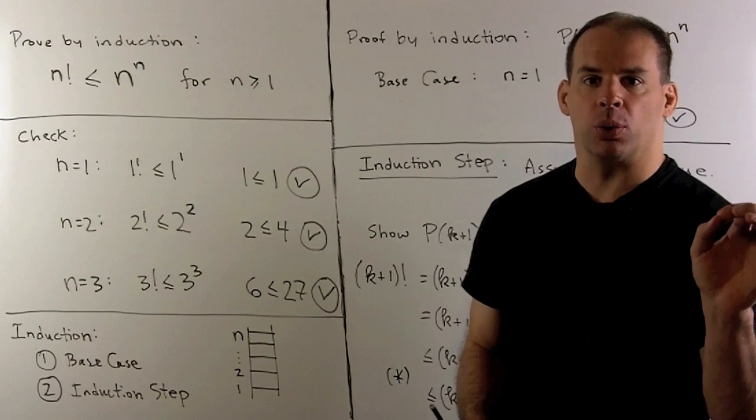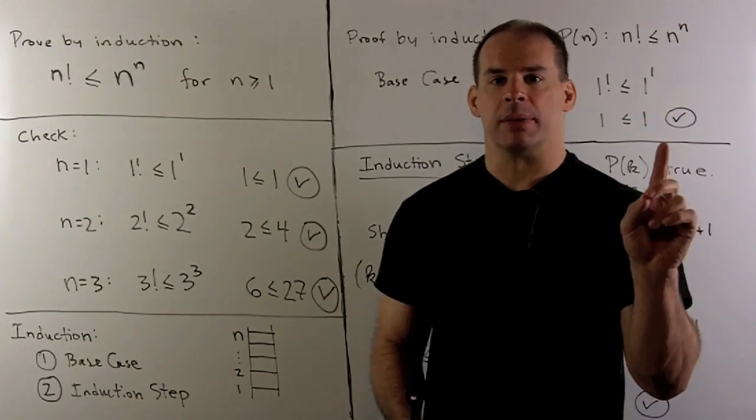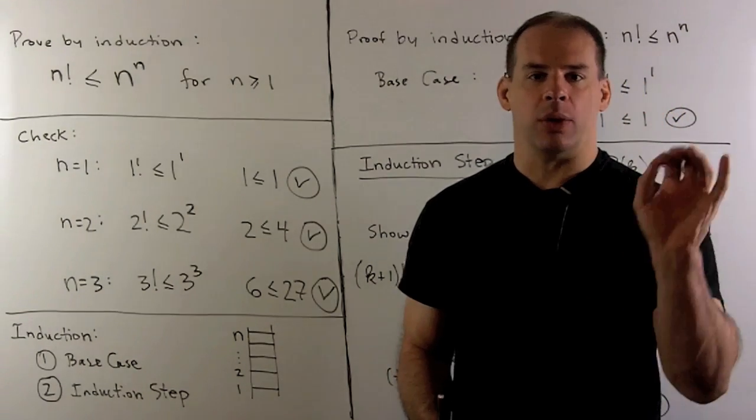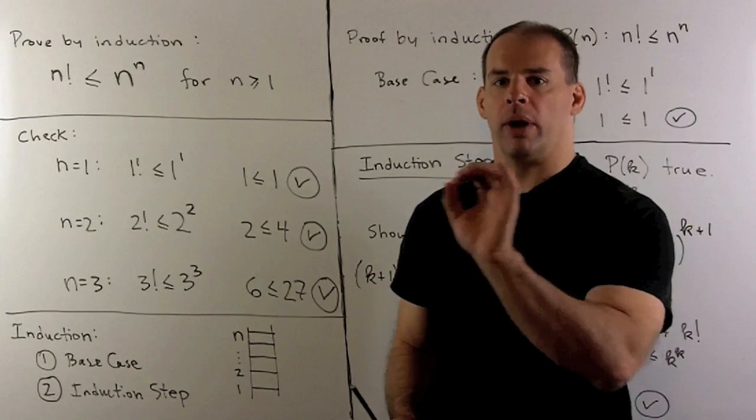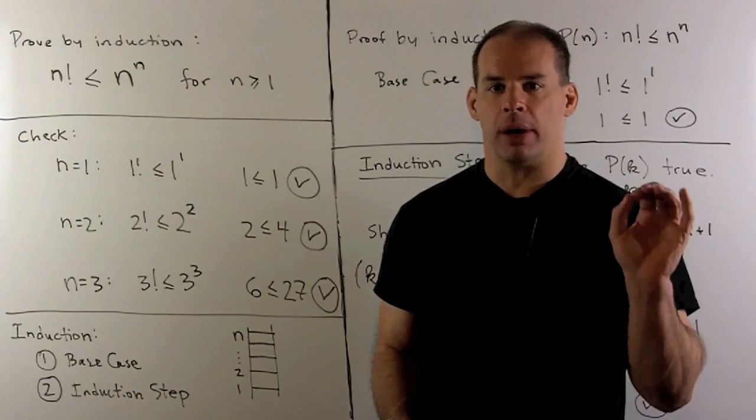Now recall the definition of n factorial. So n is going to be some positive integer. We take 1, 2, 3, all the way up through n, and then multiply all those numbers together.